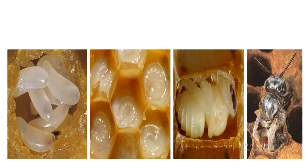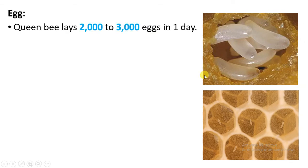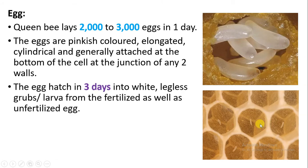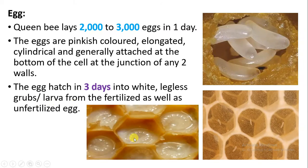Now let's study the egg stage in detail. The queen lays about two thousand to three thousand eggs in one day. They are pinkish in color and elongated or cylindrical in structure. They are always attached at the bottom part of the cell, at the junction of the two walls. After three days, the eggs hatch into a larva, also called a grub — white and legless in structure.